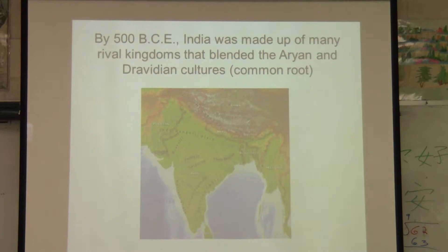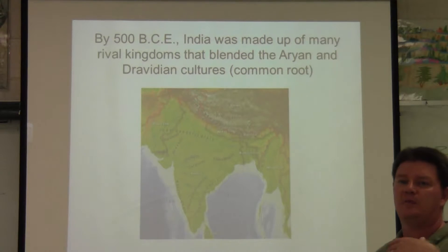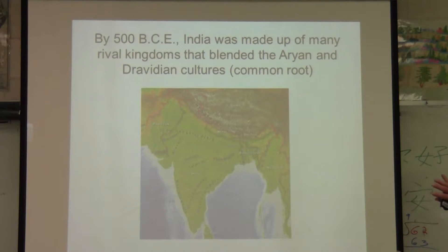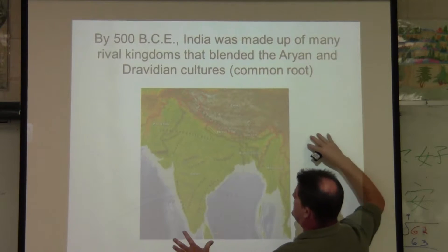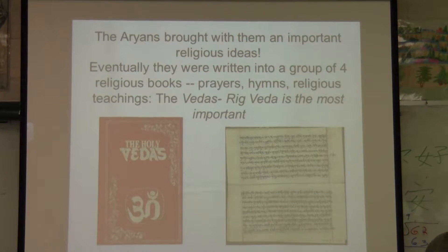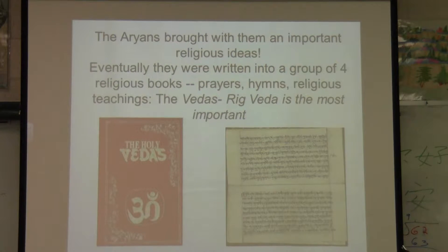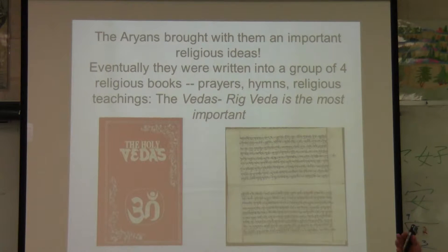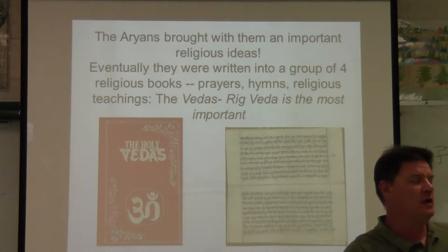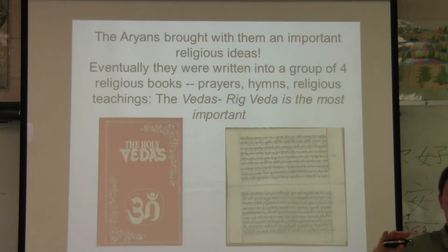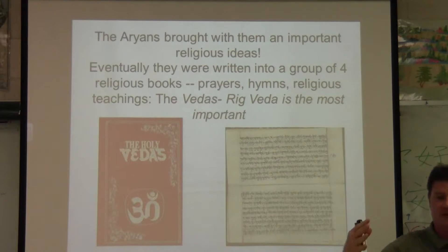By 500 BC, right around the time that Greece was getting ready to fight the Persian Wars, India was made up of many different rival kingdoms. Its size and diversity made it hard to unite. But the Aryan invaders and the native Dravidians began to form and mesh together into a new civilization. The Aryans brought with them important religious ideas known as the Vedas. For many years they were spoken orally and not written down, but after about a thousand years they were written down into four Vedas — religious books of hymns, prayers, and other religious teachings. The most important is the Rig Veda.